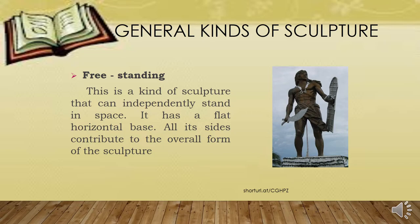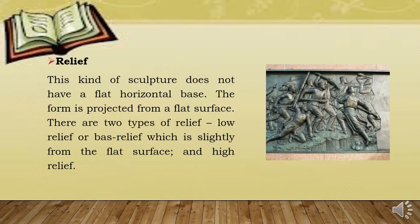Here are some general kinds of sculpture. First is freestanding. This is a kind of sculpture that can independently stand in space. It has a flat horizontal base, and all its sides contribute to the overall form of the sculpture. Next is relief sculpture. This kind of sculpture does not have a flat horizontal base — the form is projected from a flat surface. There are two types of relief: low relief, which projects slightly from the flat surface, and high relief, which projects at least half or more of the circumference from the ground.